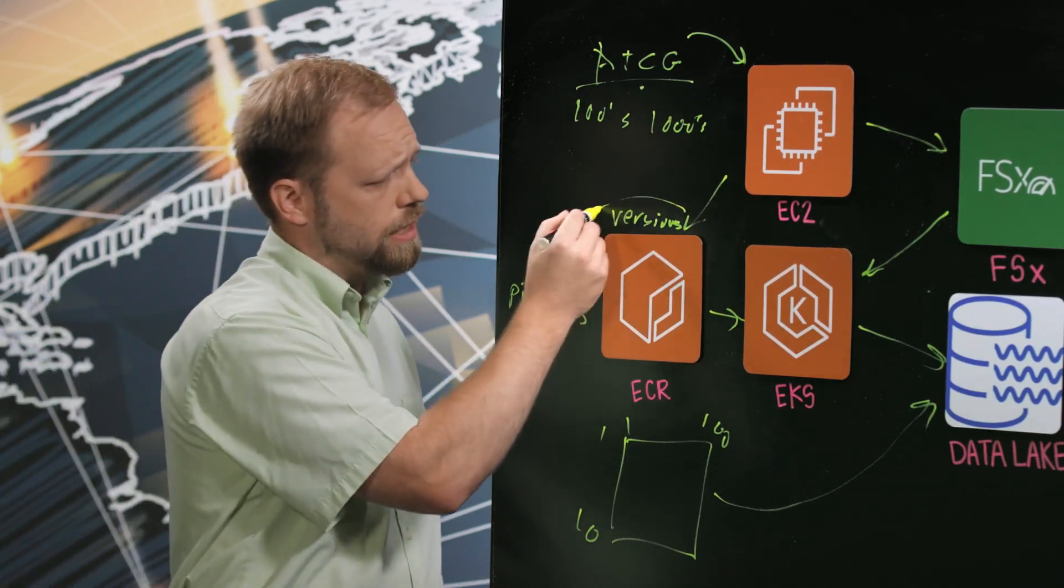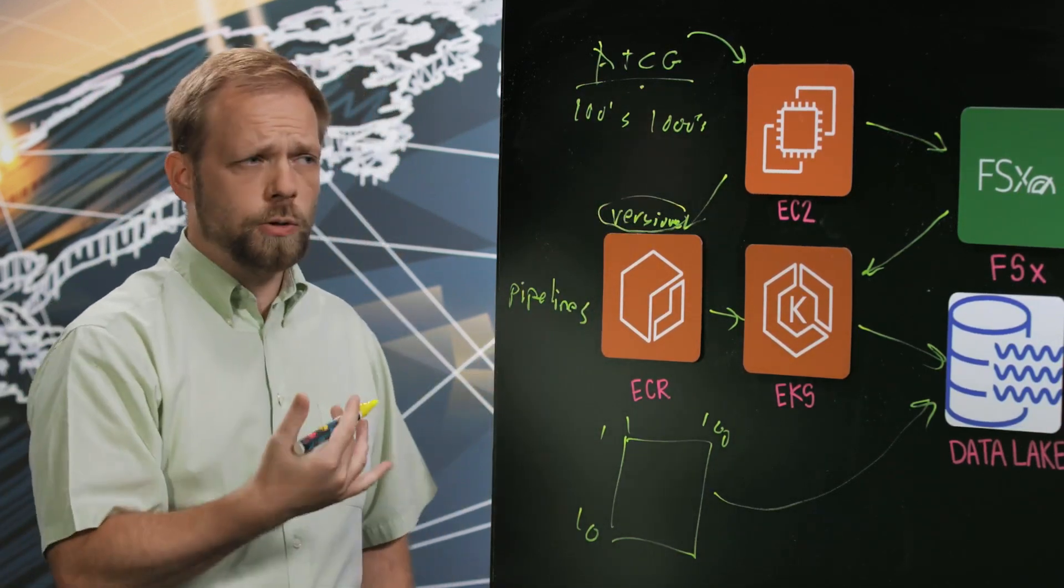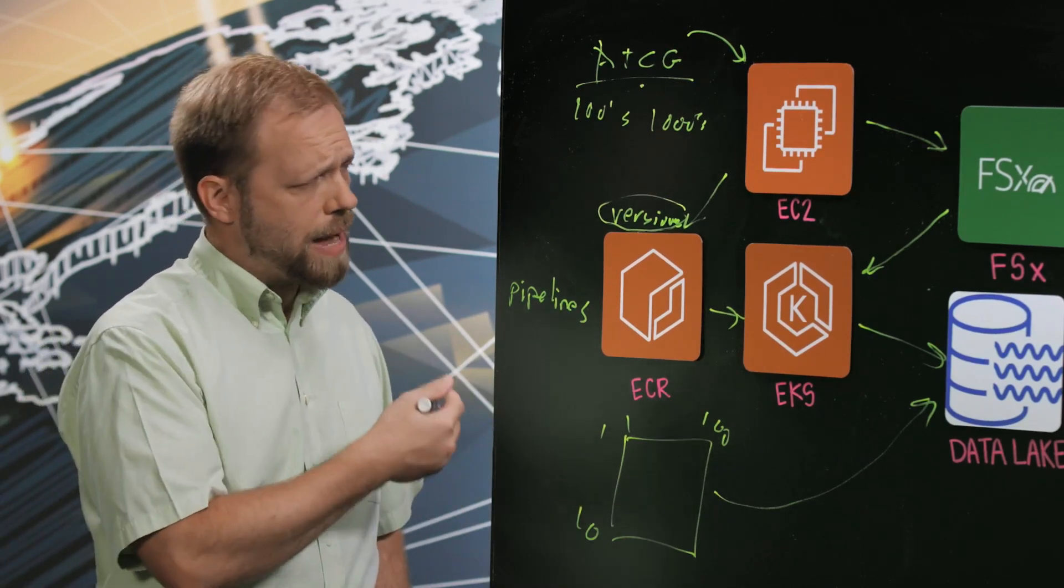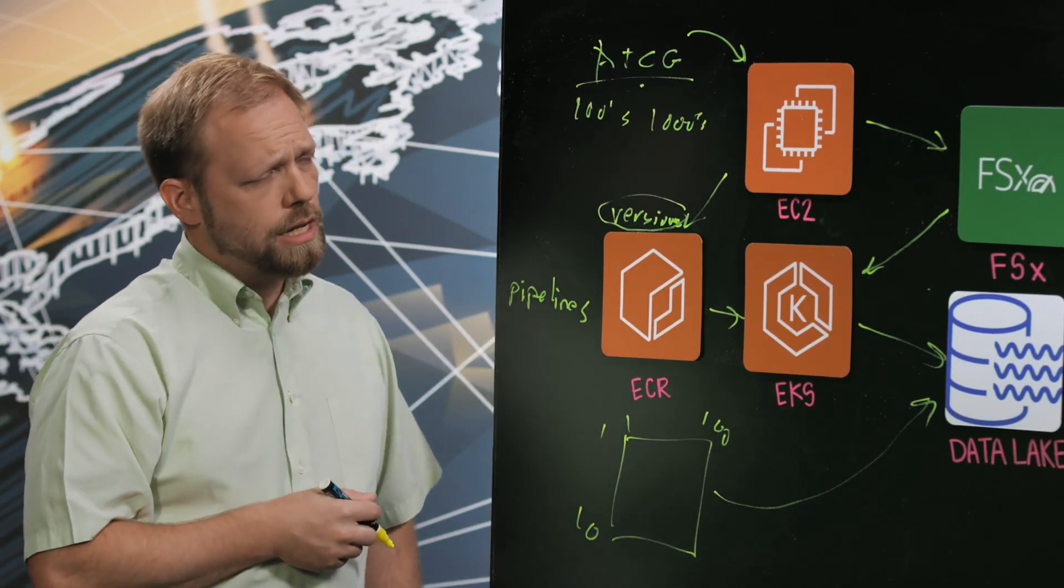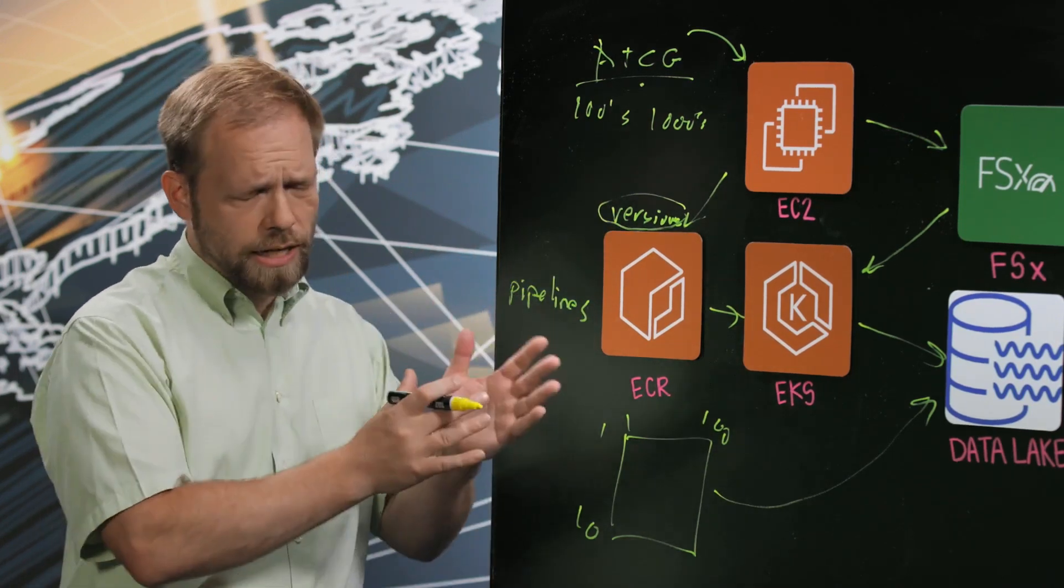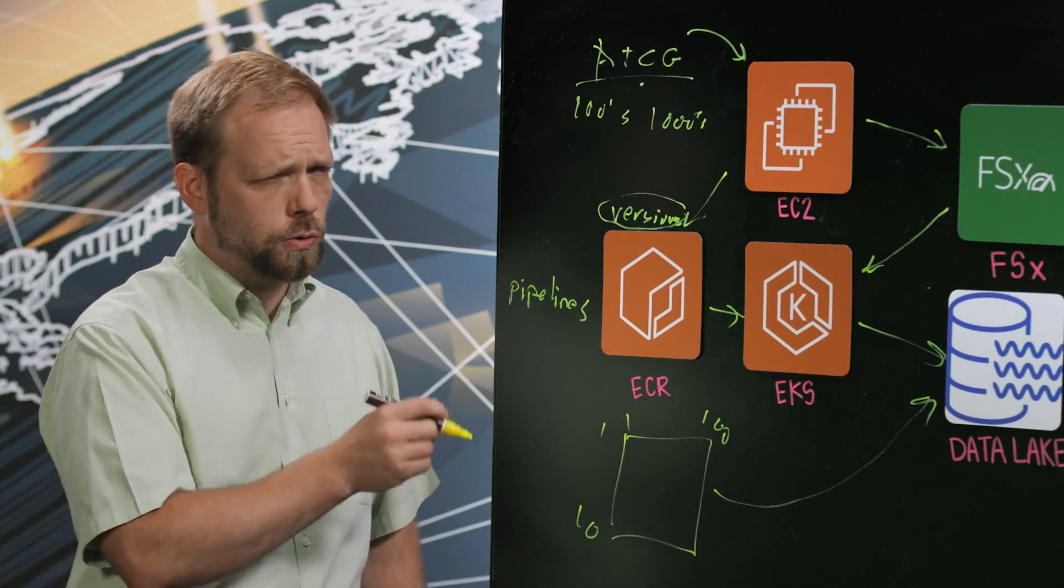The second thing is the versioning aspect is that to be able to do reproducible science, because this part of this is research and development, we need to be able to come back and say, this is the version we used. This is the set of software we use. And that's really what the versioning is locking down those software versions for all the tools that we're using in these pipelines.